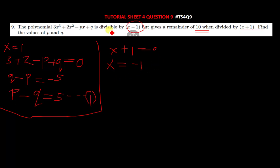You put negative 1 in this expression, so you have negative 3 plus 2 plus p plus q equals 10. You add this, you get negative 1. When it crosses the equal sign, you have p plus q equal to 11.